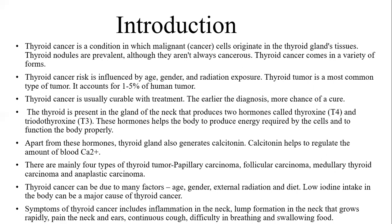Follicular thyroid carcinoma is also among the most common types of thyroid cancer. It occurs when there is a low amount of iodine in the body. Follicular thyroid carcinoma is more likely to spread to organs and other parts of the body than papillary carcinoma. Medullary thyroid cancer develops from the C cells in the thyroid gland, and these types of cancers are less differentiated compared to the other two and can easily spread to lymph nodes and other parts of the body.